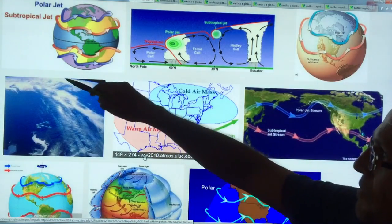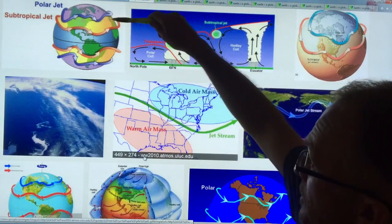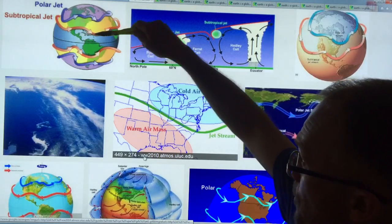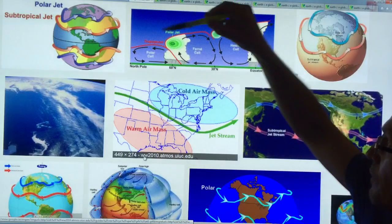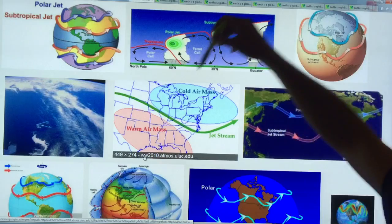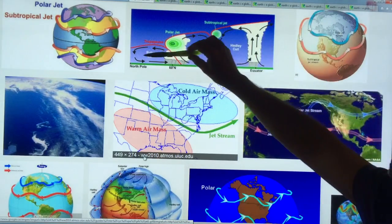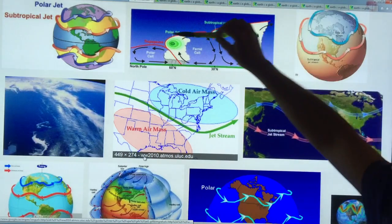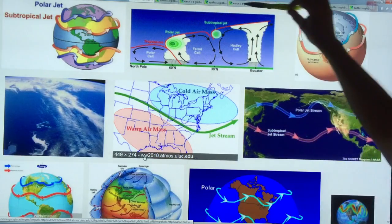So here we have the northern hemisphere, we have the polar jet circling the earth, circumventing the earth, the subtropical jet, and then the same thing in the southern hemisphere. If you have a cross-section, this is the equator, this is the north pole, this is the extent of the lower atmosphere. The troposphere extends up to the red lines here, the stratosphere is above, the division is called the tropopause.